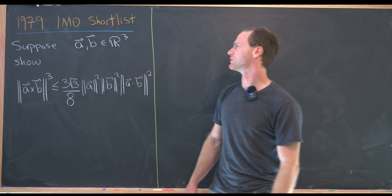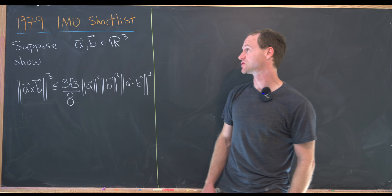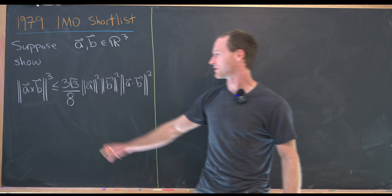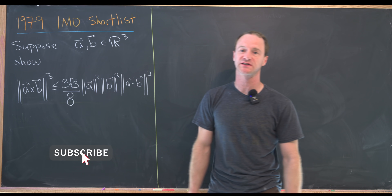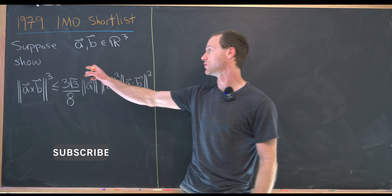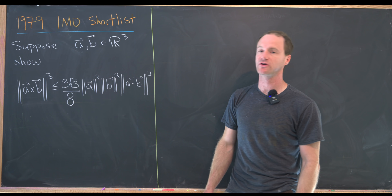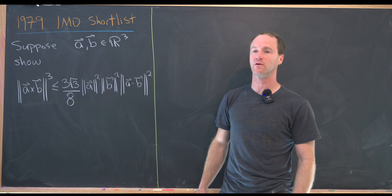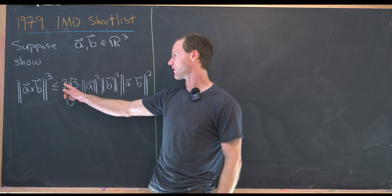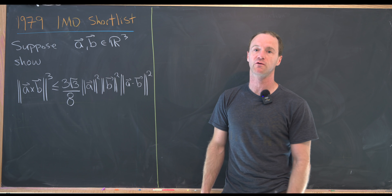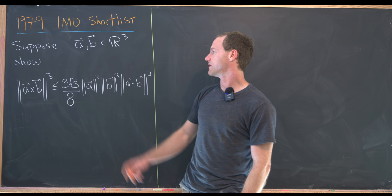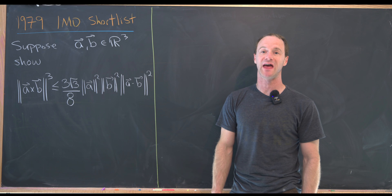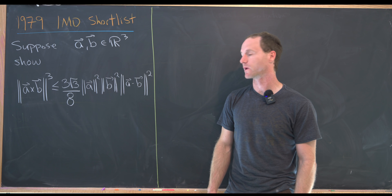Let's suppose that we've got two three-dimensional vectors, I'll call them A and B. We want to show that the magnitude of the cross product of A and B, cubed, is less than or equal to three times the square root of three over eight, times the magnitude of A squared, times the magnitude of B squared, times the magnitude of A minus B squared.